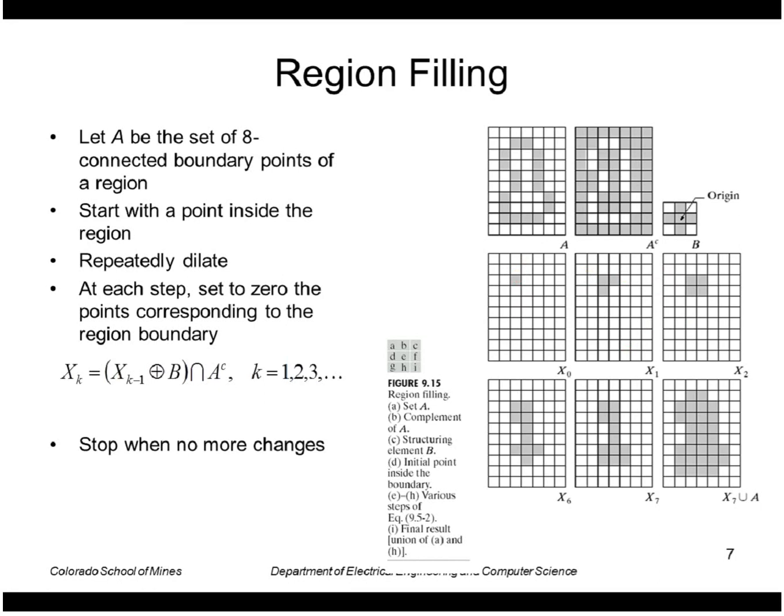But at every step we don't want that dilated portion to cross the boundary. So we intersect with the complement which is this part here, the zeros where I have the boundary. We intersect the dilated portion with that set of zeros. And that ensures that the dilation does not cross the boundary.